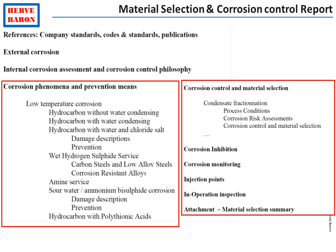A more comprehensive report is issued by the materials and corrosion discipline, called the Material Selection and Corrosion Control Report. This document has two parts. The first part lists all corrosion phenomena, since there can be several different types across units such as in a refinery or upstream facility. The second part looks at each process unit, its process conditions, and the selected material of construction for each stream and equipment.